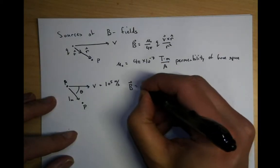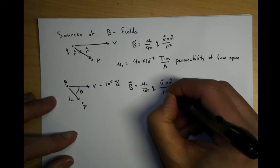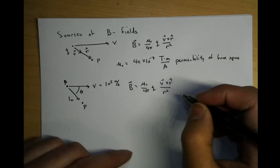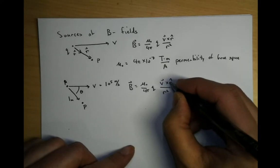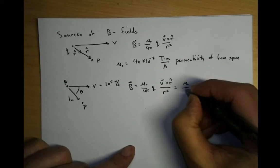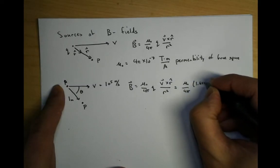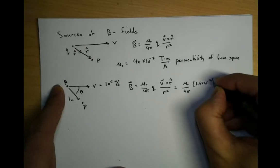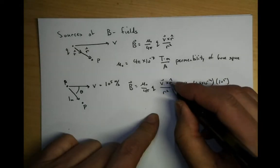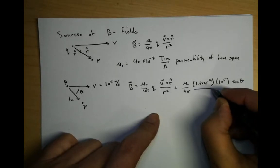Let's write down: B is equal to mu zero over four pi, q, v cross r hat over r squared. We're going to compute the magnitude. V cross r hat is going to be v sine theta. So it's going to be mu zero over four pi, q is the charge of a proton — that's 1.6 times 10 to the minus 19. V is the velocity, that's 10 to the 5. V cross r hat gives you a sine theta. This is all divided by r squared, which is just one meter squared.